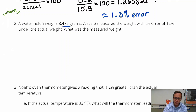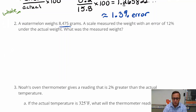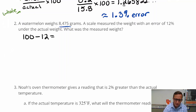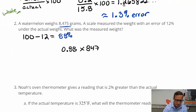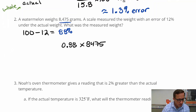This is describing a percent of change, and it looks like a deficit where it's decreasing. So you're going to do 100 minus 12, which equals 88%. We're going to change that to 0.88. So we're going to do 0.88 times 8,475, and you're going to get 7,400-something.